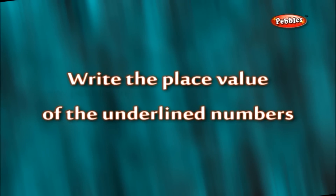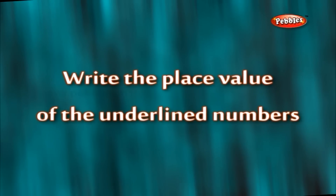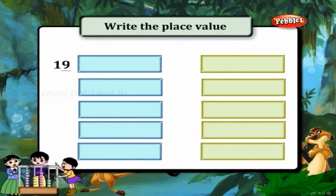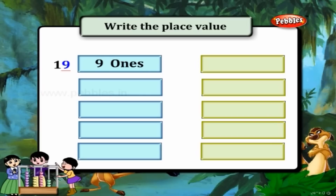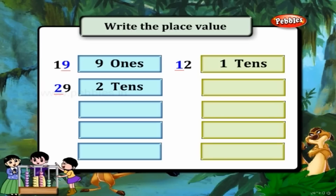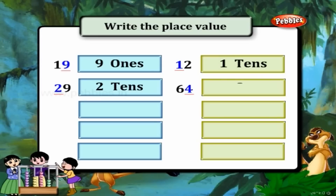Write the place value of the underlined numbers. In 19, 9 is in the ones place — so 9 ones. In 12, 1 is in the tens place — so 1 ten. In 29, 2 is in the tens place — so 2 tens. In 64, 4 is in the ones place — so 4 ones.